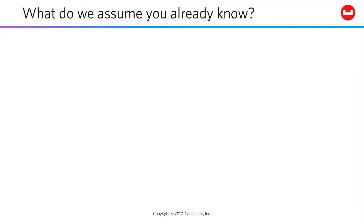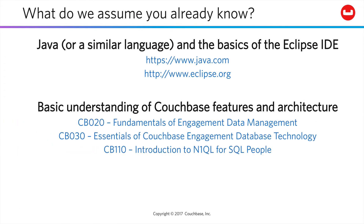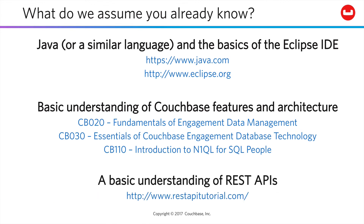We are making some assumptions about what you already know, of course. We assume you know Java and are familiar with Eclipse, even if you choose to use another tool for your own lab work — it's just that we'll use Eclipse for demonstrations. We also assume you have basic familiarity with Couchbase, which you can get easily through other free online courses here: CB20 on the fundamentals of engagement data management, CB30 on the essentials of understanding Couchbase, and possibly CB110, our introduction to the N1QL query language. We also assume you've got a basic understanding of REST APIs, and here's a good tutorial if you'd like to look at them in general before jumping into this course.